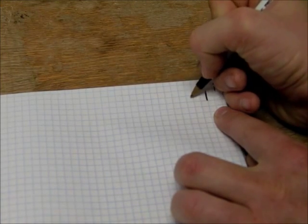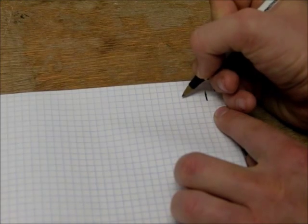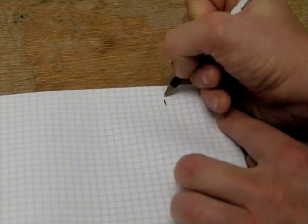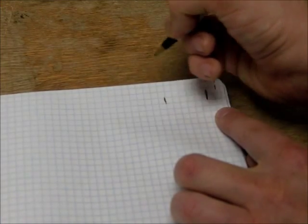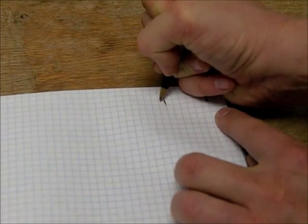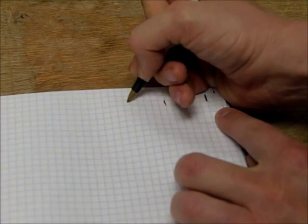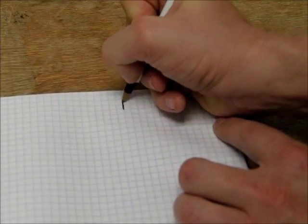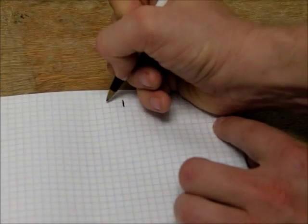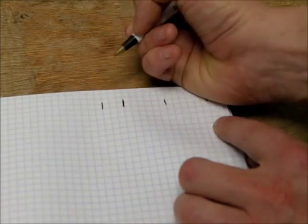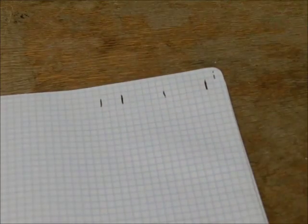Then I'm going to count in six squares. One, two, three, four, five, six. And put another tick mark. Then I'm going to count another six squares. One, two, three, four, five, six. Put another tick mark. Then I'm going to count three squares. Put a tick mark. And that's it. So now I have my tick marks.